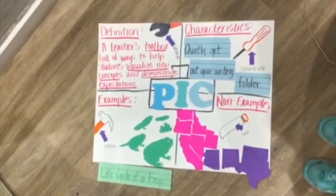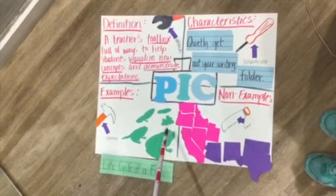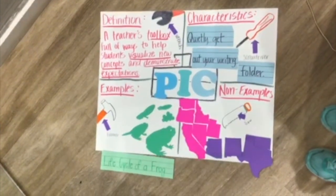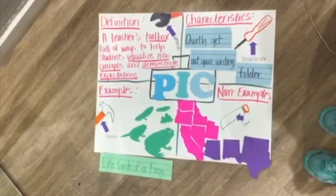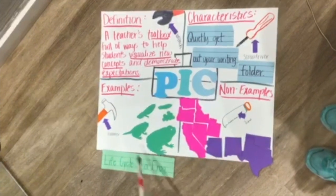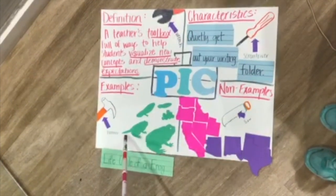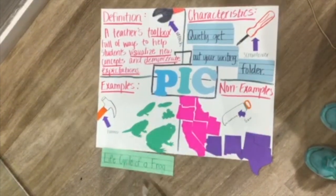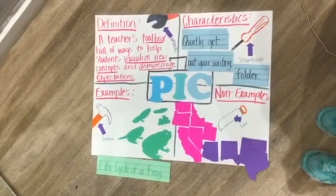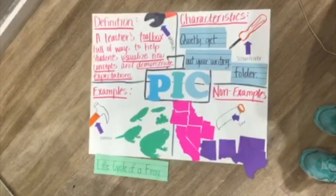This would also be a great example of using logical sequencing and segmenting, because if you start the life cycle of a frog halfway through, the kids are not going to understand the concept you're trying to get across.